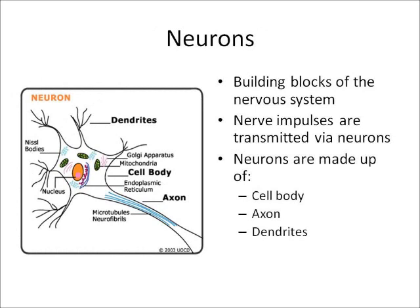Neurons are the building blocks of the nervous system. Nerve impulses are transmitted via neurons. Neurons are made up of three parts: the cell body, the axon, and the dendrites.